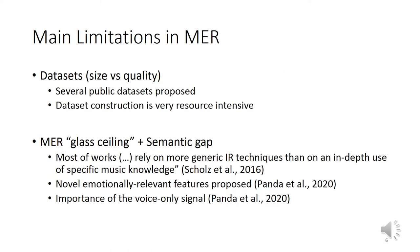Several approaches have been proposed, but nowadays the main issues are: first, the lack of public datasets that are large and high quality, because it is very hard to get controlled emotion annotations from users; and secondly, there is a so-called class ceiling, with few improvements in the field over the last decade. Some authors point to a semantic gap, where most of the works focus on machine learning algorithms but use generic, low-level, non-musical features that are far from what we as humans associate with emotions.